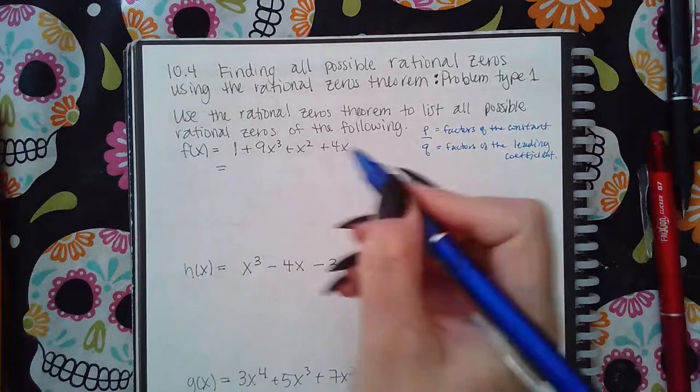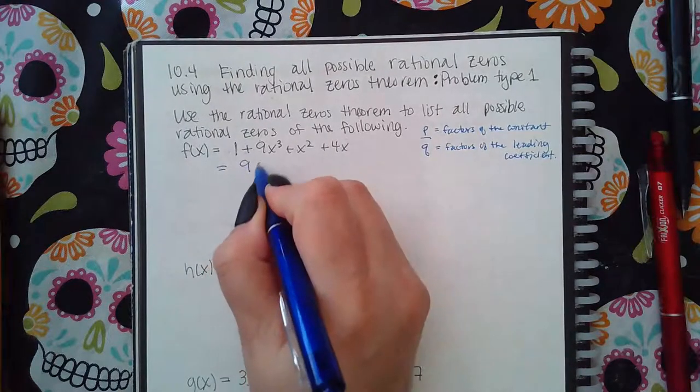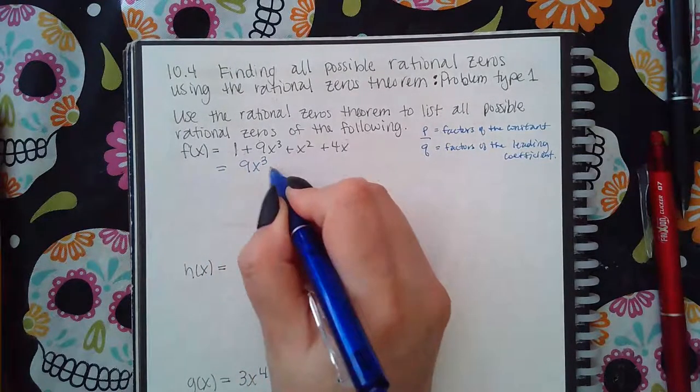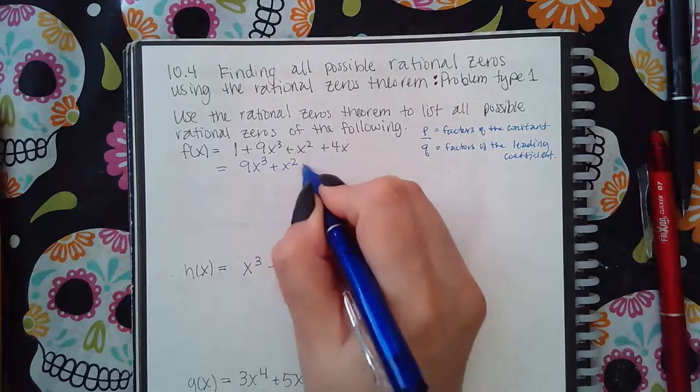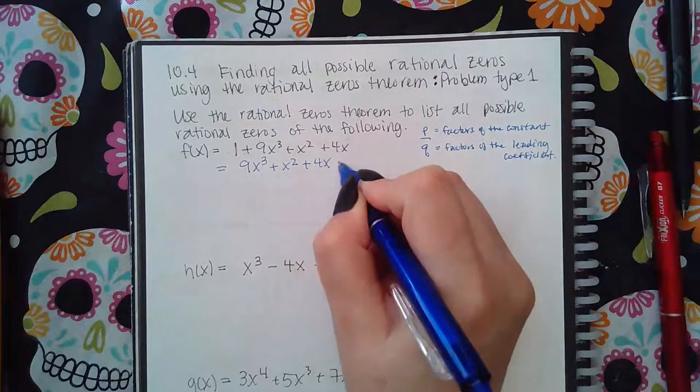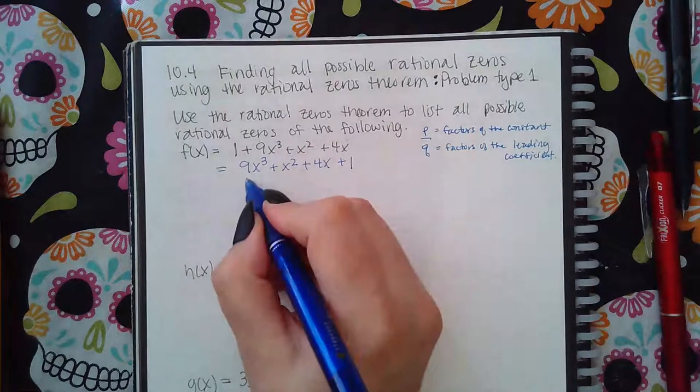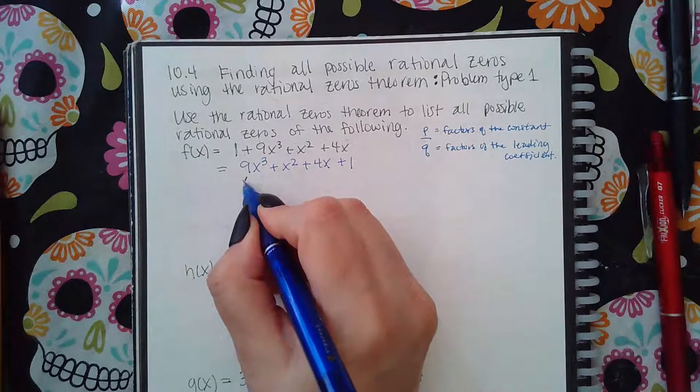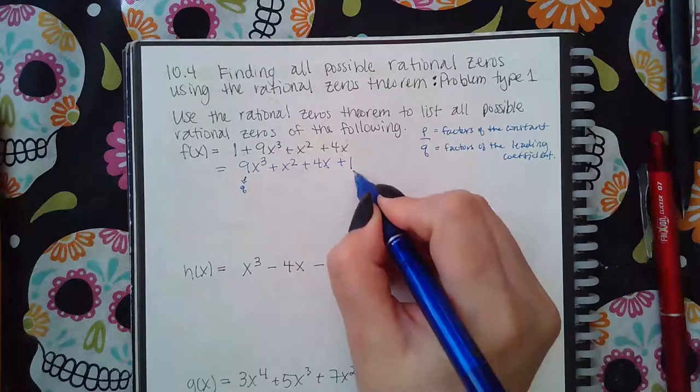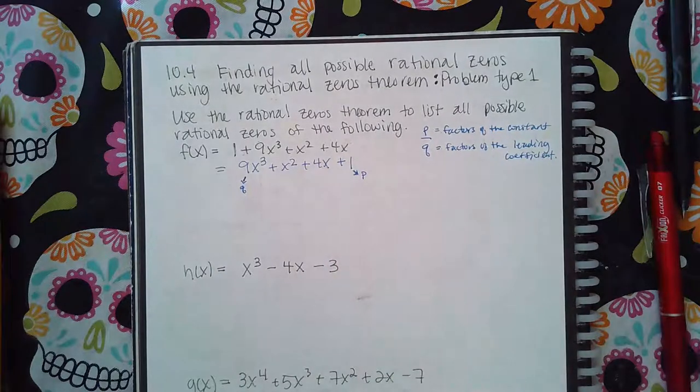So the first thing I'm going to do is rewrite this in the correct order. So we need the positive 9x cubed, then the positive x squared, then the positive 4x, and then the positive 1. Now, this is where I'm going to get my Q from, and this is where I'm going to get my P from.